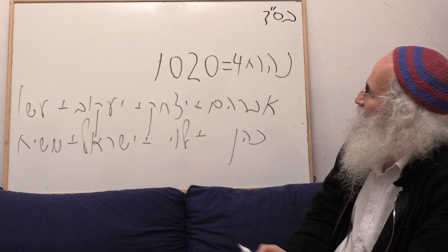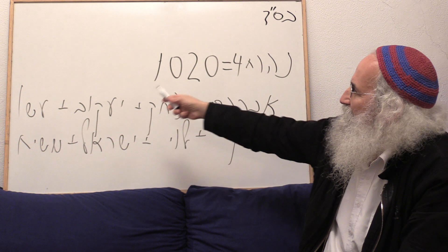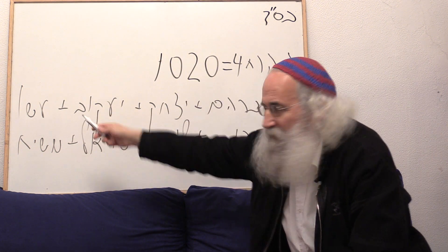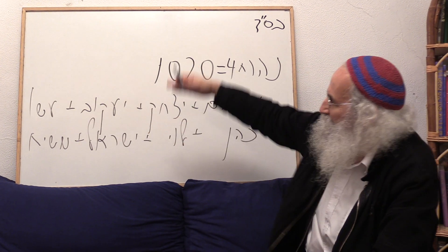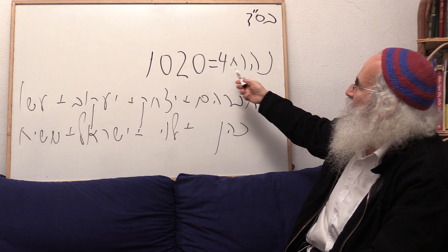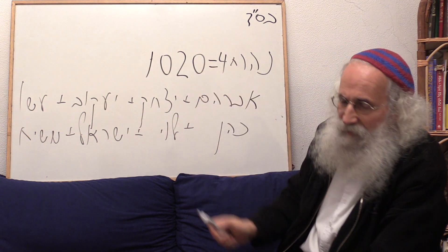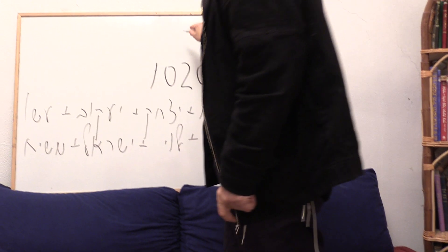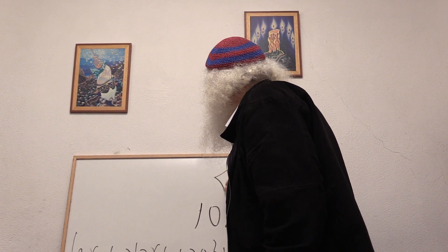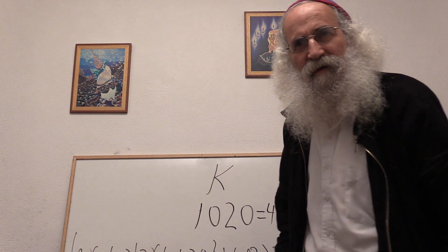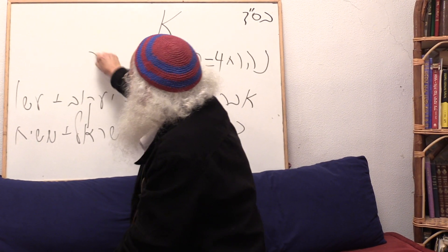And we did the gematria of Avraham, Yitzhak, Yaakov, Yaakov with Vav plus Esau equal Kohen, Levi, Israel, Mashiach, what is completely parallel, four concepts, what equals four times river, and this number. And this number equals the name I shall be, if I write a big Aleph.